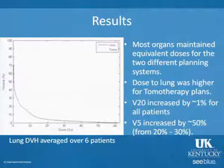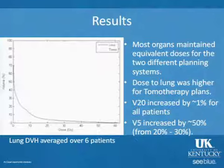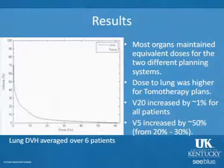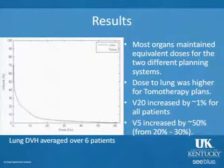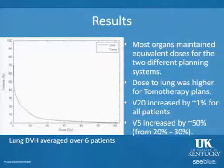For most organs at risk, equivalent doses were maintained between the two planning systems. What was of interest was the lungs — the dose to the lungs was higher for the tomotherapy plans. At V20, it was only about 1% higher, which is not much. But at V5, the increase was about 50%, from 20% to 30%. This higher lung dose is again due to the large number of beam angles used in tomotherapy.